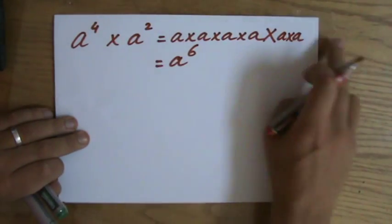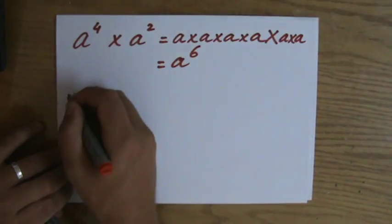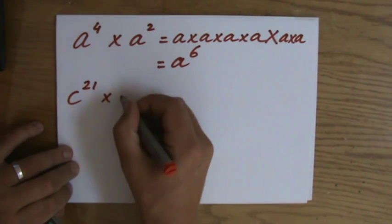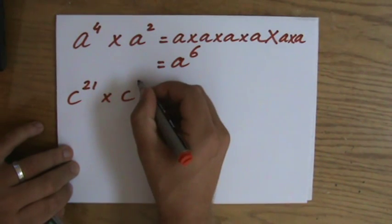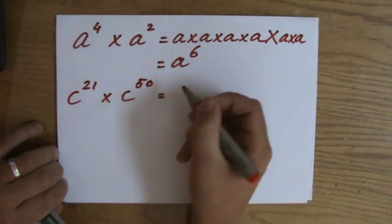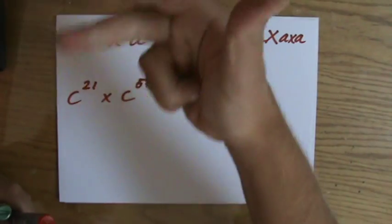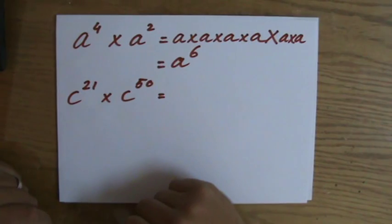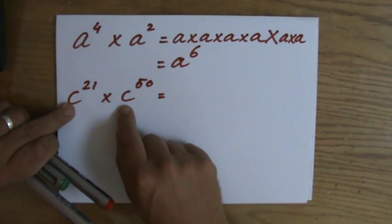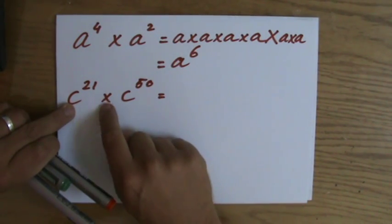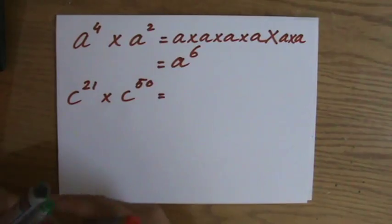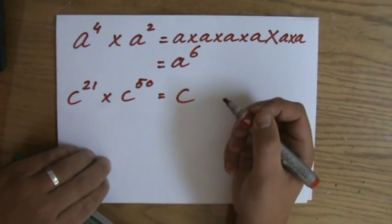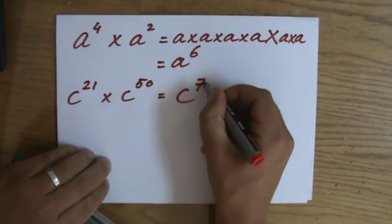Of course, I'm not going to write this out every time. Because if I have c to the power 21 times c to the power 50, am I going to write down c times c times c...? No, of course not. Because I realize now if the base is the same and it's a multiplication, I add the indices. So the answer is c to the power 71.